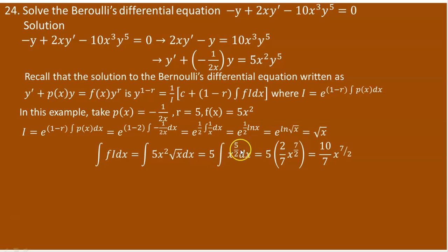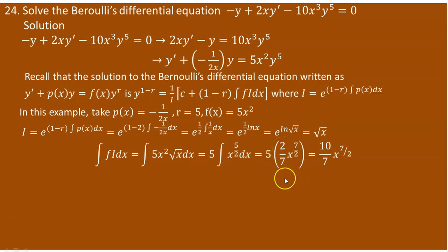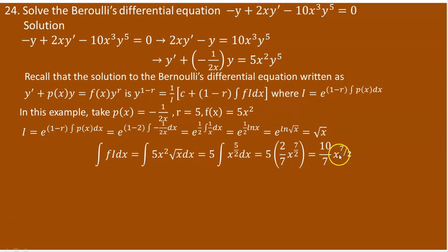Integrating x to the power of 5/2: add 1 to the exponent to get 7/2, then divide by 7/2 which is the same as multiplying by 2/7. So 5 times 2/7 gives 10/7, and the result is 10/7 times x to the power of 7/2. The integral of f·I is therefore 10/7 x to the power of 7/2.